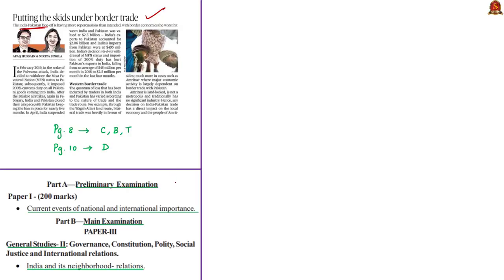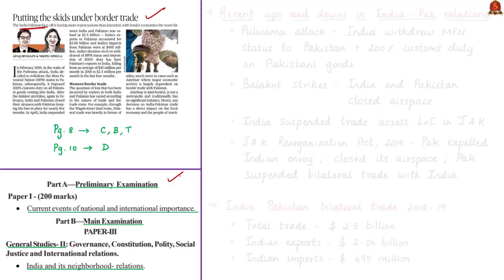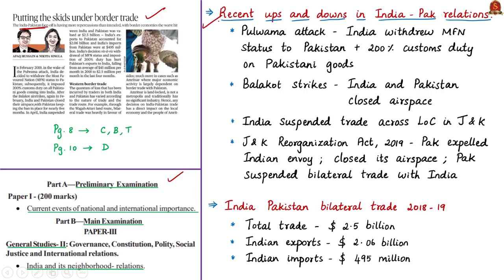The next article is an editorial on India-Pakistan trade relations. The author discusses recent bilateral tensions, including the Pulwama terrorist attack of February 2019, after which India withdrew Most Favoured Nation (MFN) status from Pakistan. MFN status ensures non-discriminatory trade among all WTO partner countries. Following withdrawal, India imposed 200% customs duty on all Pakistani goods. Then the Balakot air strikes led to both countries closing their airspace.